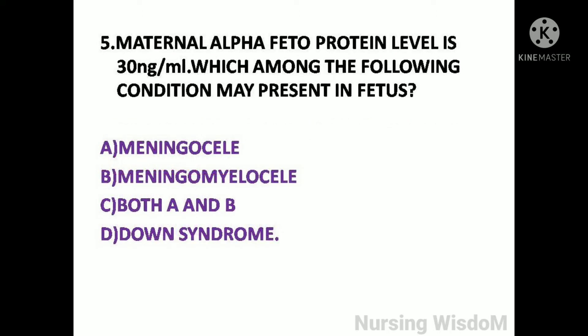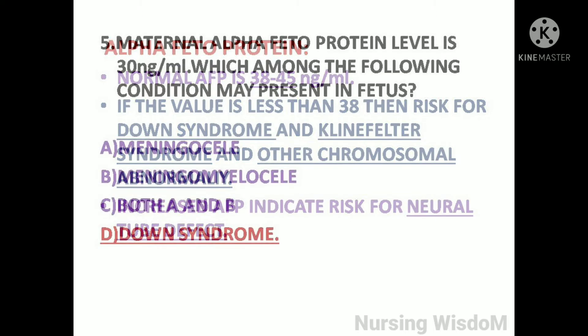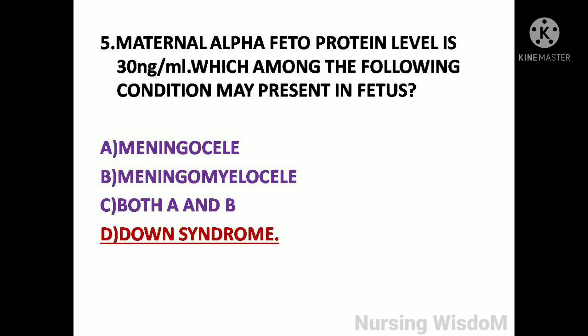Next question: Maternal alpha-fetoprotein level is 30 nanogram per ml. Which among the following conditions may be present in the fetus? Option A: meningocele; option B: meningomyelocele; option C: both A and B; option D: Down syndrome. Normal AFP is 30 to 45 nanogram per ml. If the value is less than 38, there is risk for Down syndrome, Klinefelter syndrome, and other chromosomal abnormalities. Increased AFP indicates risk for neural tube defect. So here the answer is option D, Down syndrome.